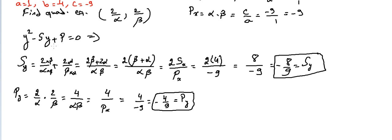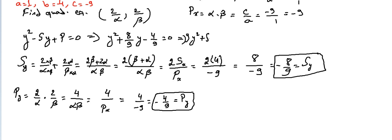Now we can form the equation: y squared minus s times y plus p equals zero. The sum is minus eight over nine, so it becomes y squared plus eight over nine times y, plus the product minus four over nine, equals zero. Multiplying through by nine: nine y squared plus eight y minus four equals zero, or in x: nine x squared plus eight x minus four equals zero.